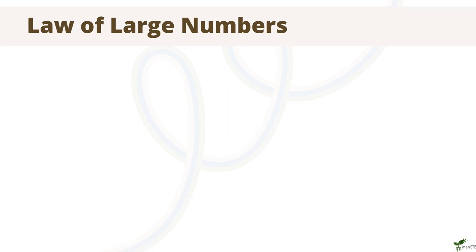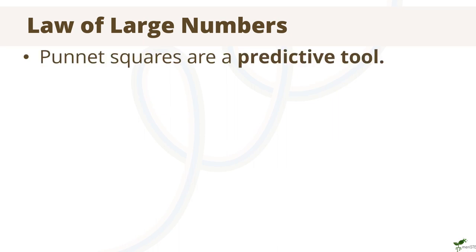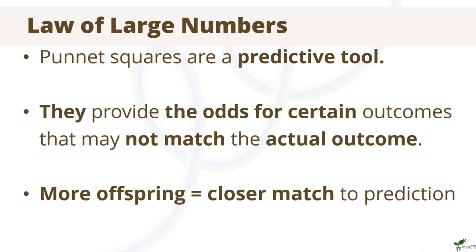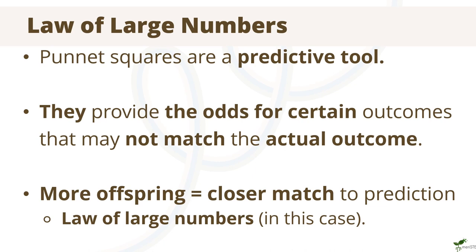Punnett squares are a helpful tool for determining the probabilities that can occur with crossbreeding genes. However, it's important to remember that these are only the possible outcomes, and are not definite outcomes. For instance, if the couple from the previous example were to have 4 children, it doesn't mean that 1 of the 4 kids will definitely have cystic fibrosis. Instead, each child has the same 1 in 4 chance of inheriting 2 cystic fibrosis genes. The more offspring there are, the closer the actual ratios will be to the probabilities. Mendel bred thousands of pea plants before proposing his offspring ratio — this is known as the law of large numbers.